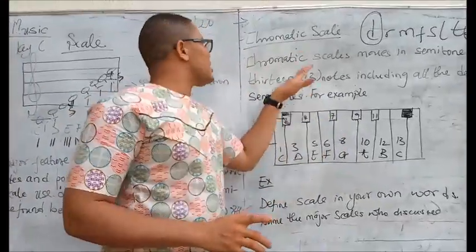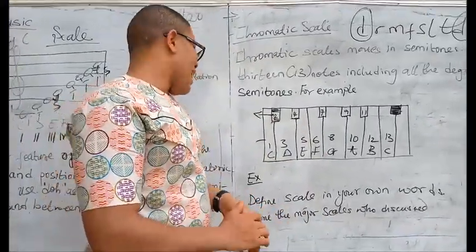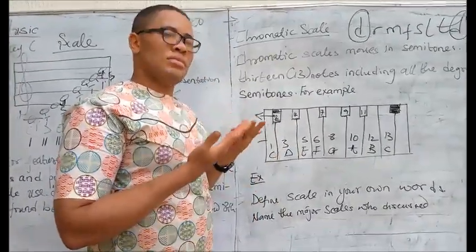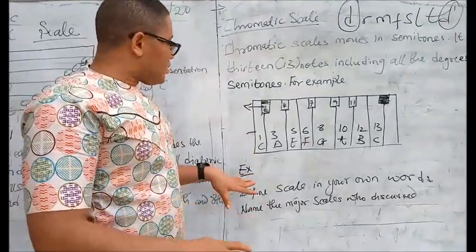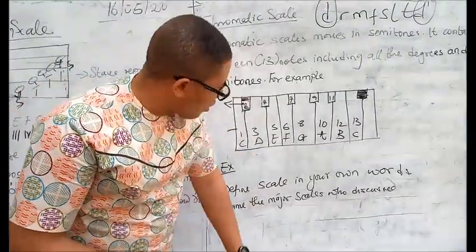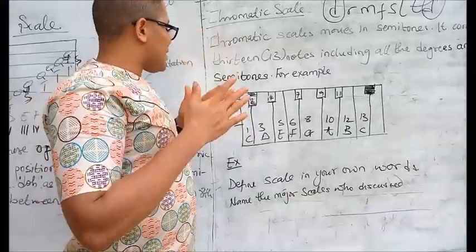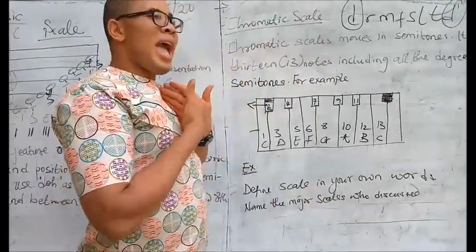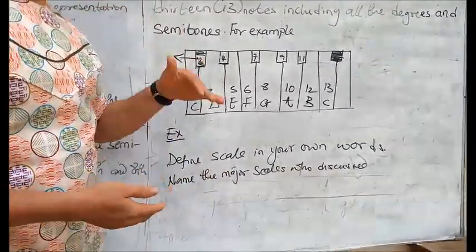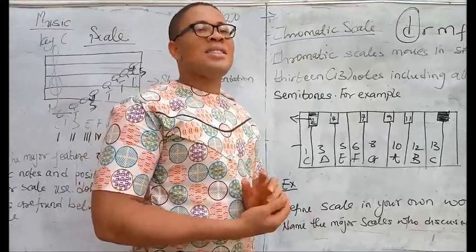The only thing you have to know in this chromatic scale is that it comprises 13 notes including all the degrees of the semitone. Now my dearest students, for your take-home assignment, I want you to give me the definition of scale in your own words, in your own understanding, not the way I have defined it. Secondly, I want you to give me the major scales we discussed today in an elaborate way. Thank you and stay safe at home.